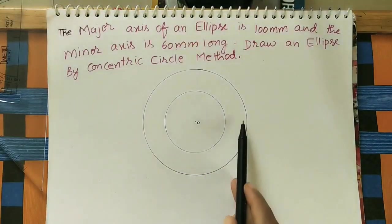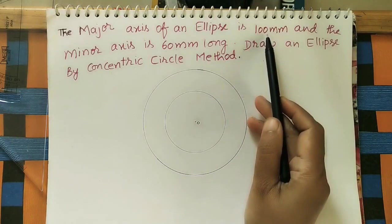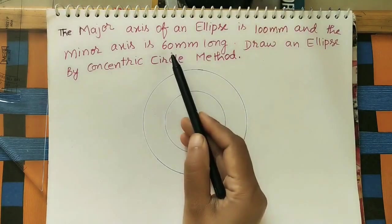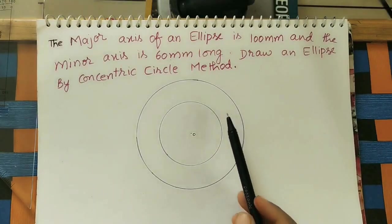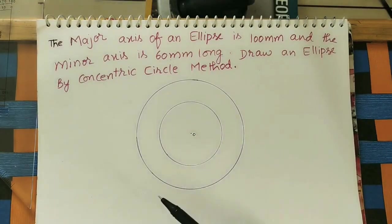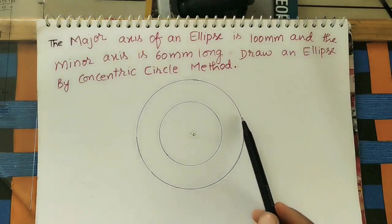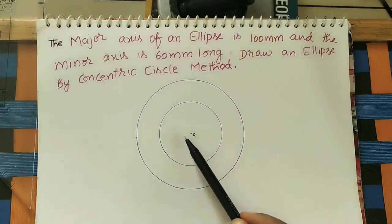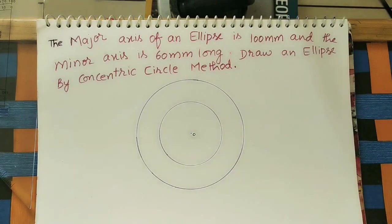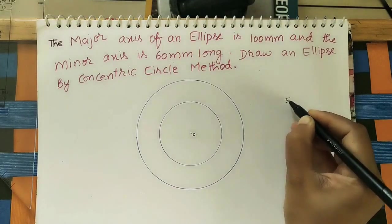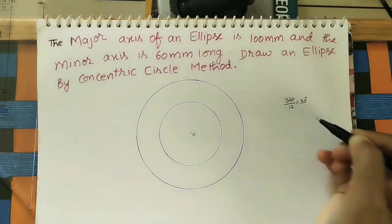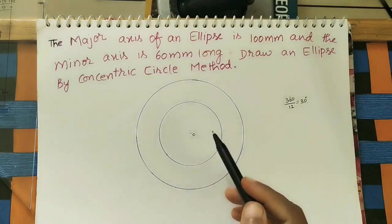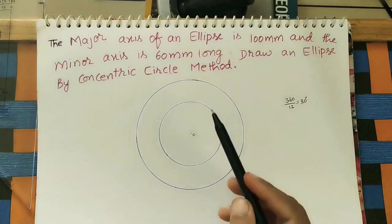The bigger circle diameter equals the major axis length and the smaller circle diameter equals the minor axis length. After getting these two circles, divide the circle into 12 equal divisions. The angle at the center for any circle is 360 degrees, so divide 360 by 12 — each part is 30 degrees.